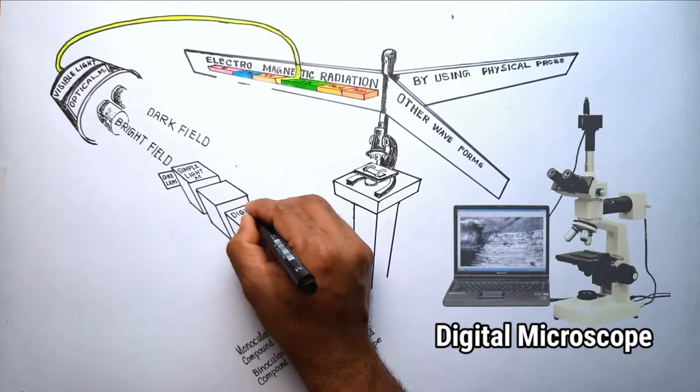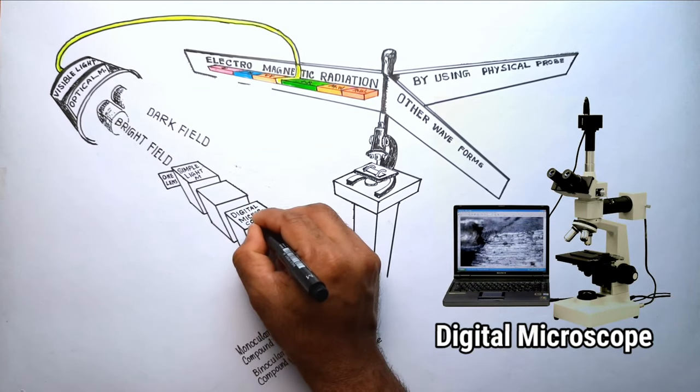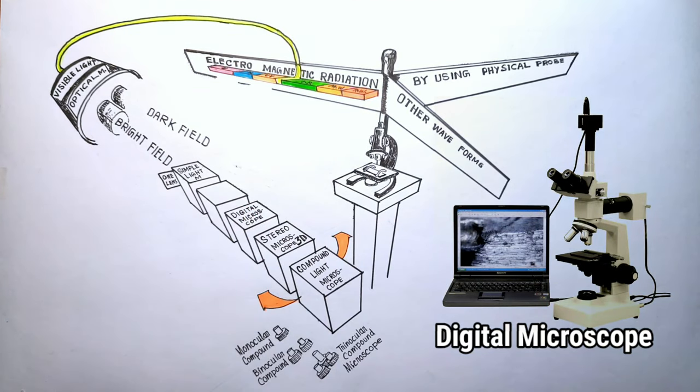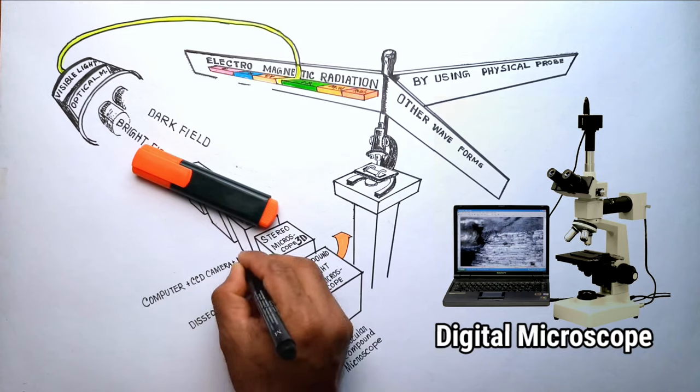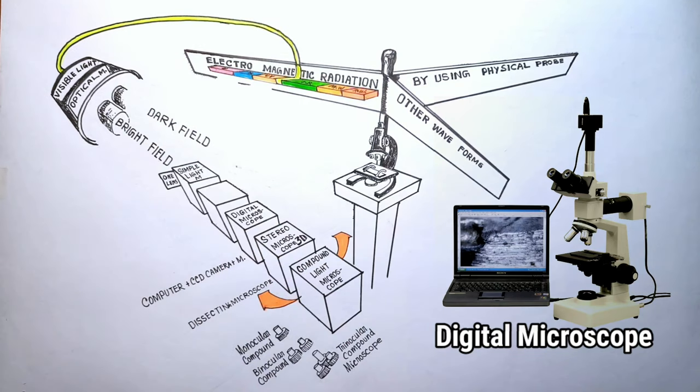The fourth type is the digital microscope. It uses the power of a computer to view objects. If we add a digital CCD camera connected to a computer via USB cable to a trinocular compound microscope, it will become a digital microscope.